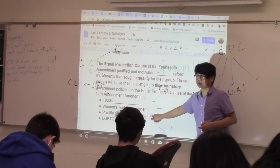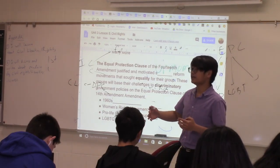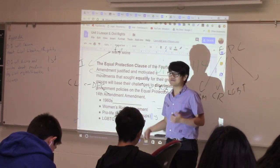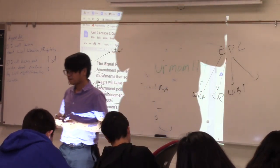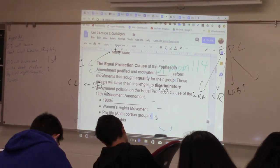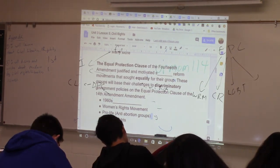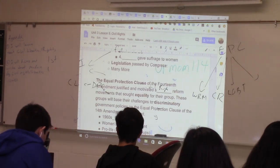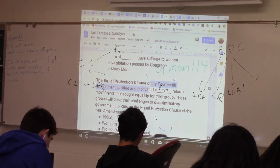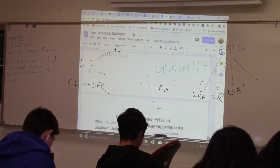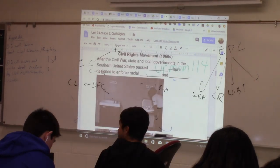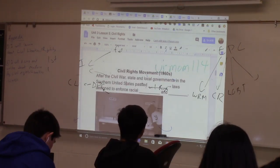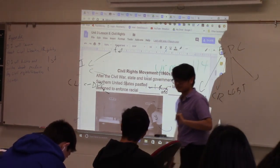The Equal Protection Clause inspired the women's rights movement, the 1960s civil rights movement for African Americans, and today the LGBT community. Even anti-abortion or pro-life groups have used the Equal Protection Clause to argue against abortion. The 14th Amendment justified and motivated social reform movements. In the 1960s, the African American civil rights movement led by Martin Luther King, Malcolm X, and others used the Equal Protection Clause as their main justification for wanting equal rights.